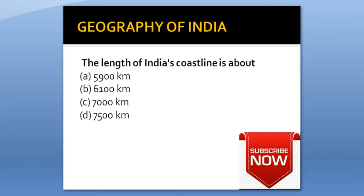The length of India's coastline is about: Option A: 5,900 km. Option B: 6,100 km. Option C: 7,000 km. Option D: 7,500 km. The answer is 7,500 km.